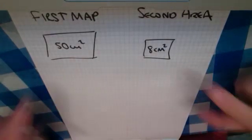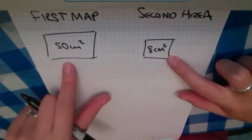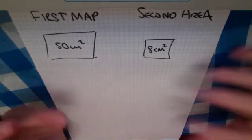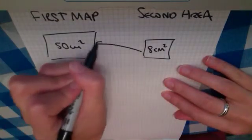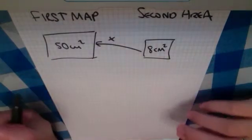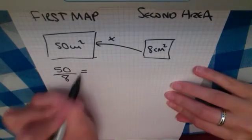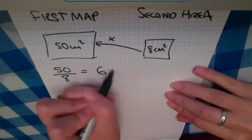So in this instance we're looking at areas, and it's very easy to see how we would find the area scale factor here. Hopefully you can see the area scale factor is what we multiply 8 by to get 50. And the way that we work that out is to do 50 divided by 8, which gives us an answer of 6.25.